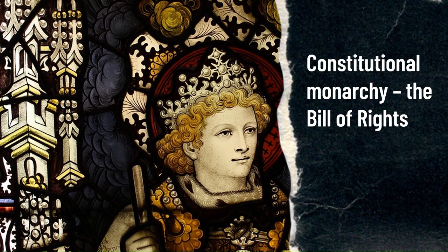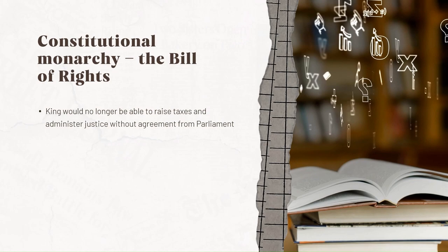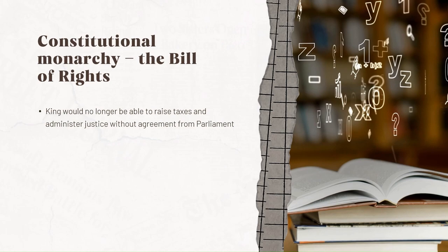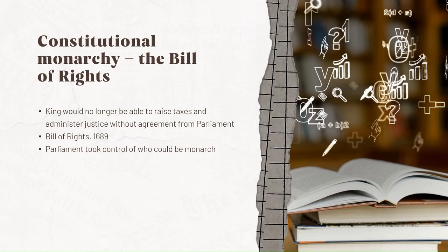Constitutional monarchy. The Bill of Rights. At the coronation of William and Mary, a Declaration of Rights was read. This confirmed that the king would no longer be able to raise taxes and administer justice without agreement from Parliament. The balance of power between monarch and Parliament had now permanently changed. The Bill of Rights, 1689, confirmed the rights of Parliament and the limits of the king's power.